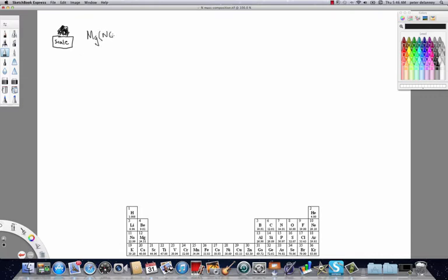So let's get the formula for magnesium nitrate on the screen here. Okay, so I called this an ionic compound. It's an ionic compound because it contains a metal along with nonmetals.